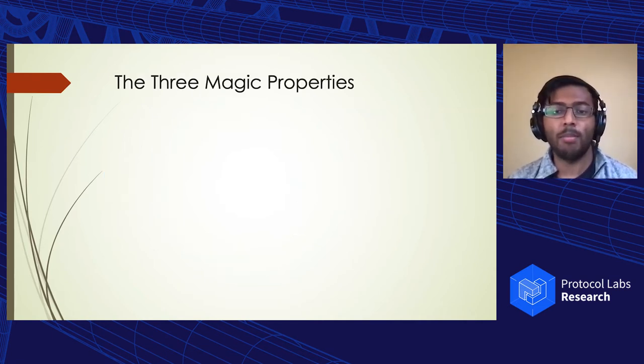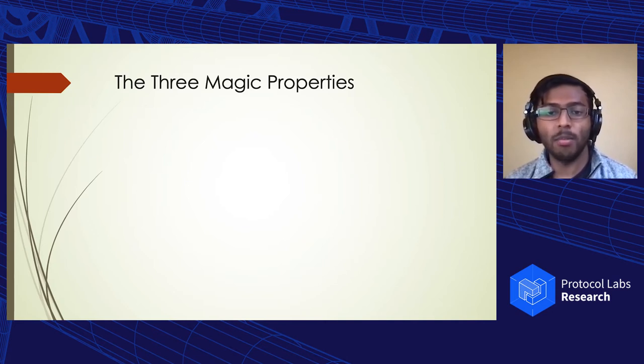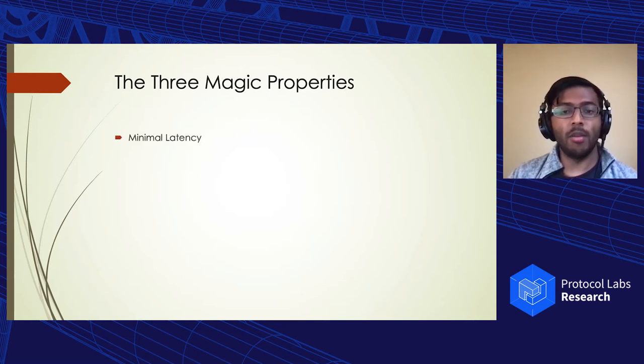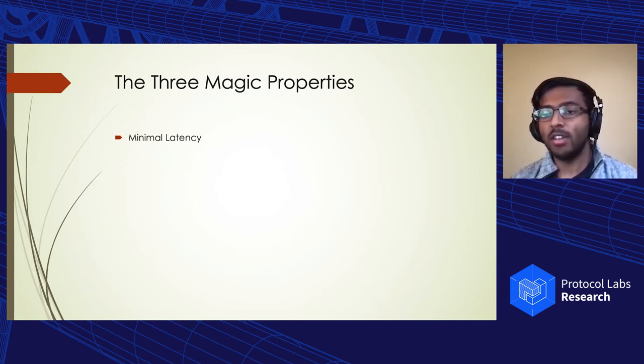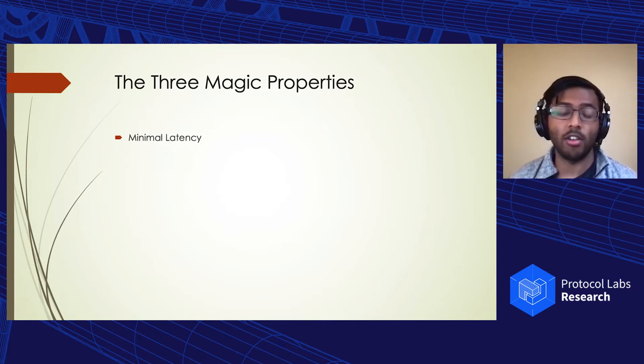There are three magic properties that previous partially synchronous BFT protocols failed to accomplish simultaneously that we're going to try to get here. The first is latency. Latency is generally undervalued when compared to throughput, but it's just as important. It's been shown by companies like Amazon and Google that an extra 100 milliseconds of latency can actually cost millions of dollars. Additionally, for applications like a transactional database, which cannot have big batches, higher latency can actually increase transaction contention leading to a higher abort rate and thus lower throughput.